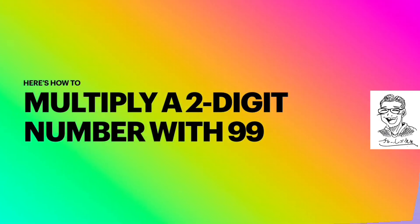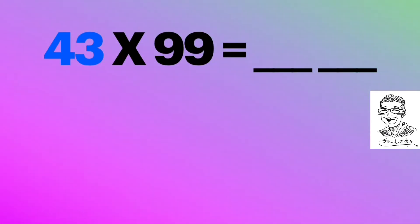Here's how to multiply a two-digit number with 99. For example, 43 times 99.